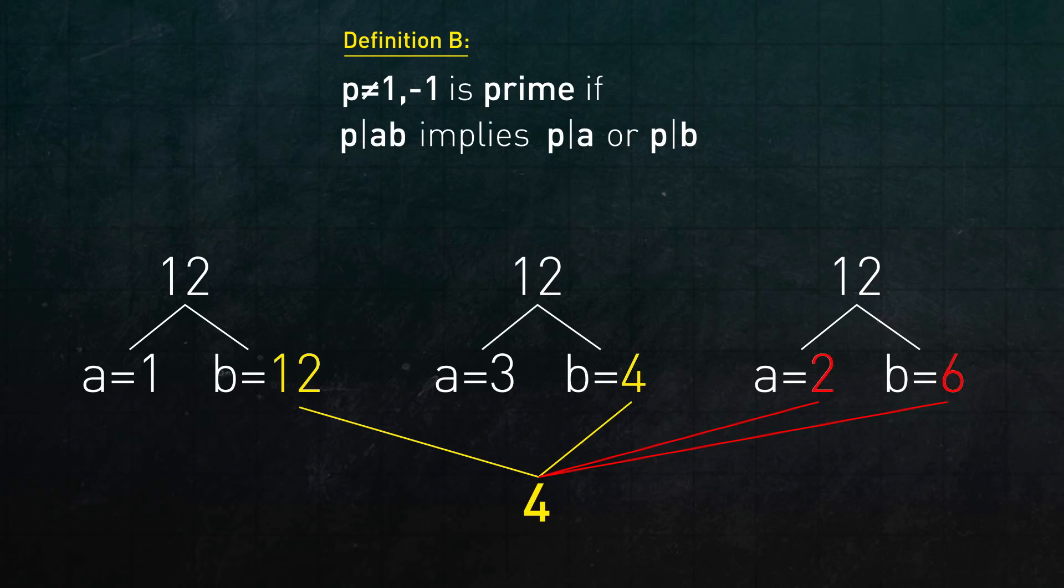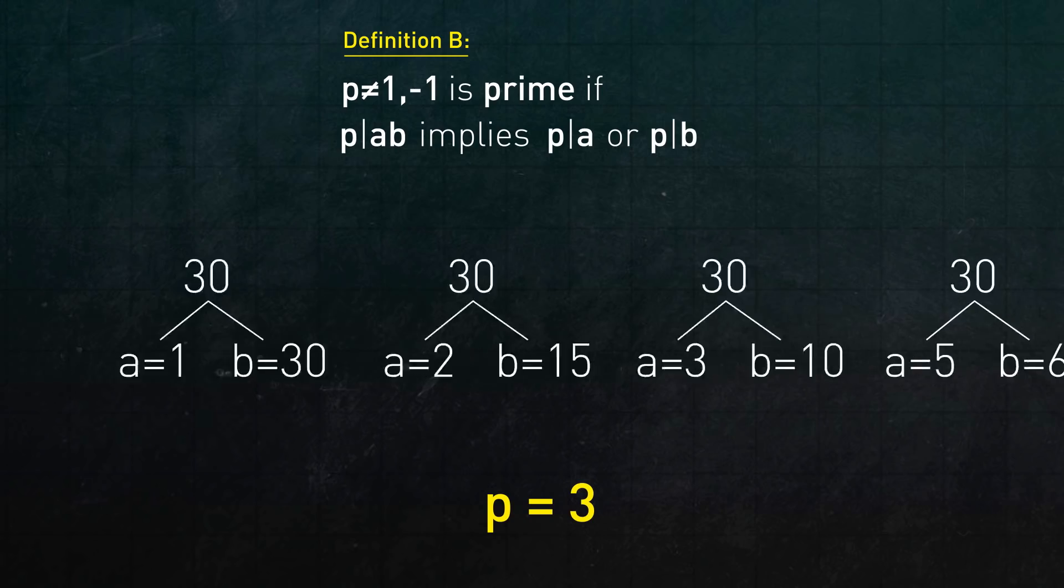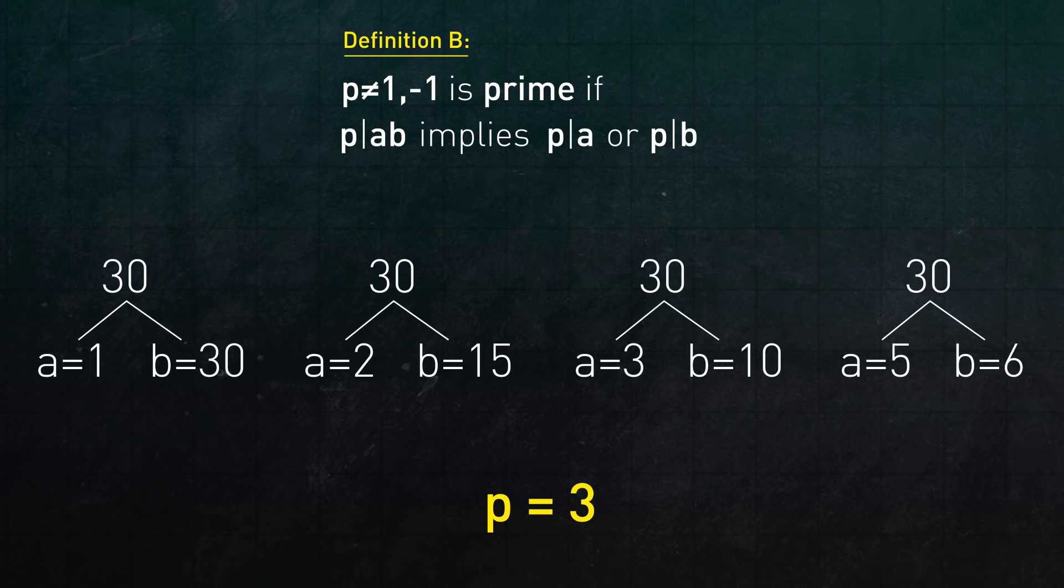And the idea is that this observation will hold for all multiples of 3. For example, 3 also divides 30, and no matter how you write 30 as a product of two numbers, 3 will always divide one of the factors. Now, 6 also divides 30, but it does not have this property. In particular, 6 is not prime. So this new definition of prime is perfectly valid, even though it's not the one that we're so used to.